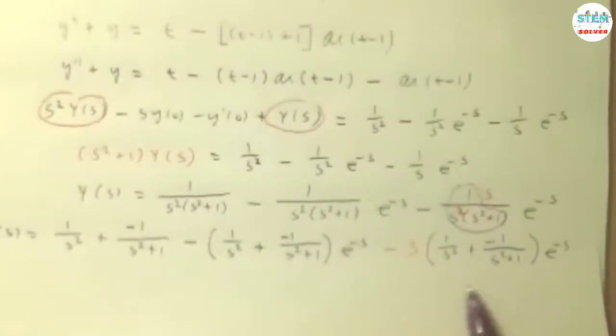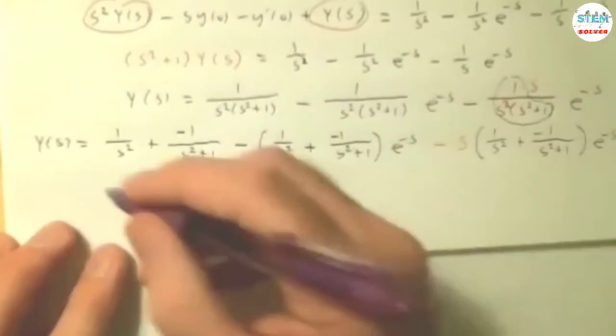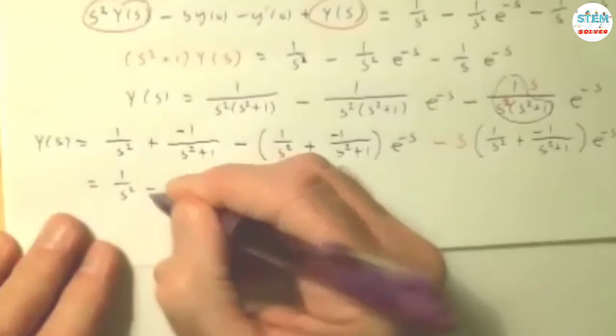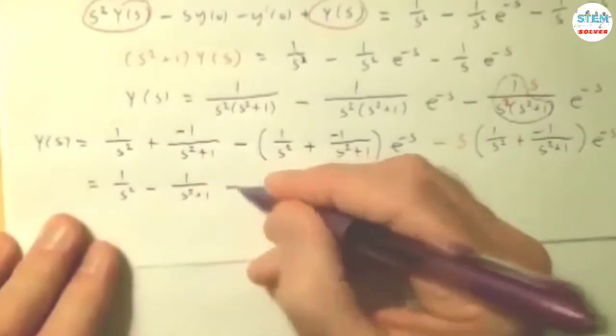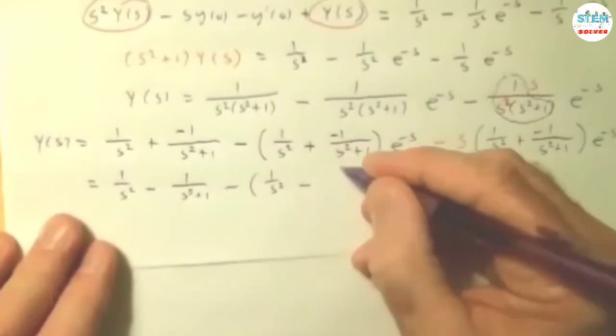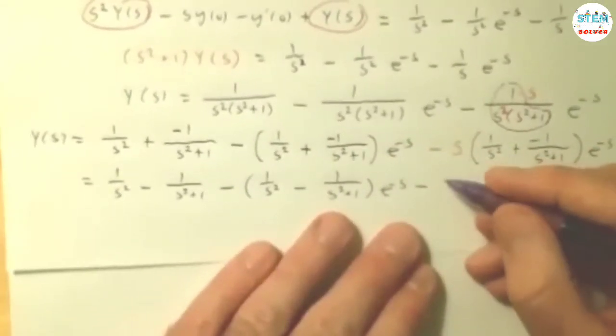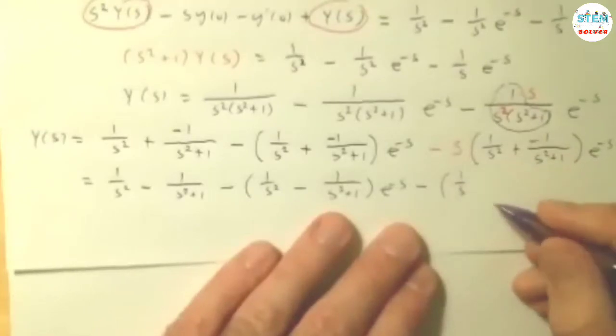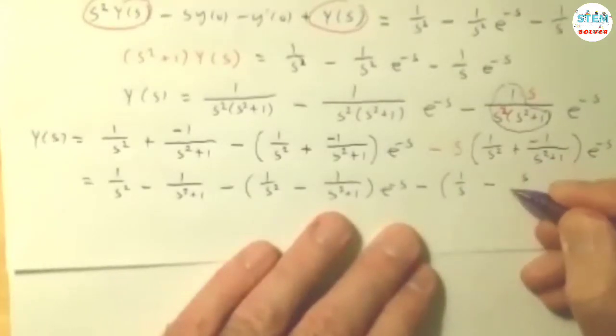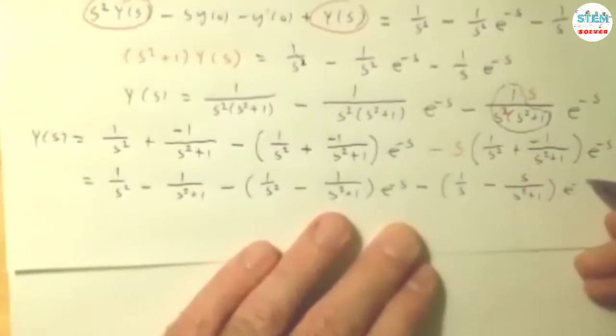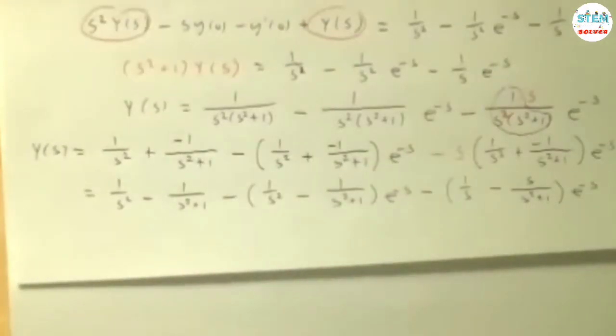Now the s, of course, has to go back in again. I pulled it out so I can do this, but the s has to go back in again. I have 1 over s squared minus 1 over s squared plus 1 minus 1 over s squared minus 1 over s squared plus 1 e to the negative s. Minus now, if I bring this s back in, you're going to have 1 over s and then minus s over s squared plus 1 e to the negative s. Again, you notice how I'm avoiding doing partial fractions. You want to do that because it's a huge time sink.